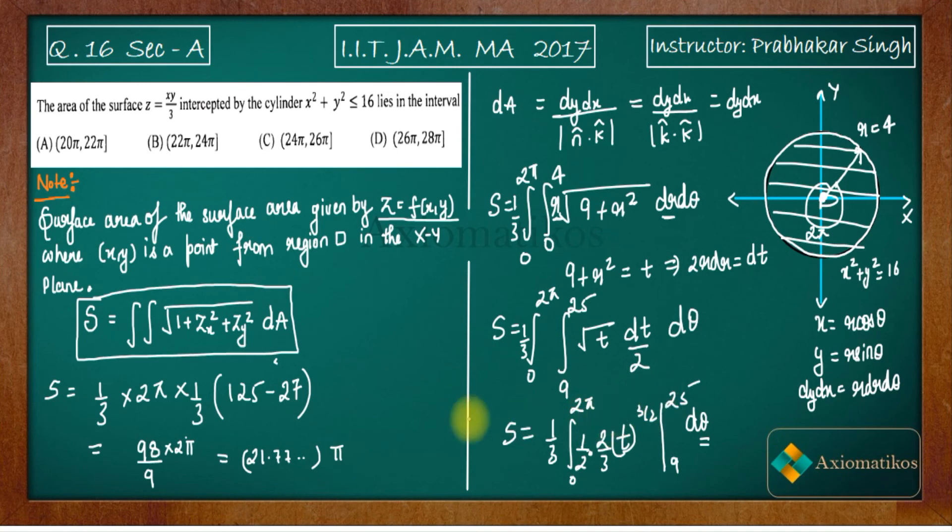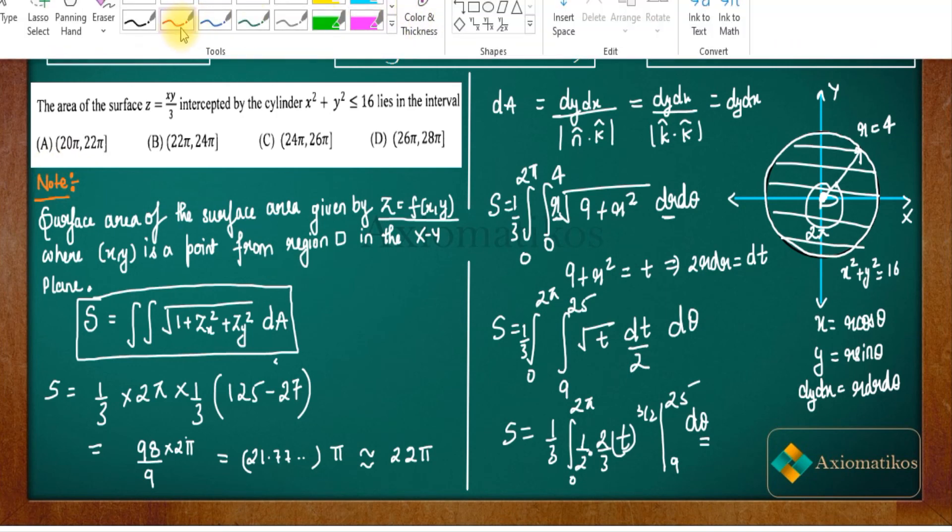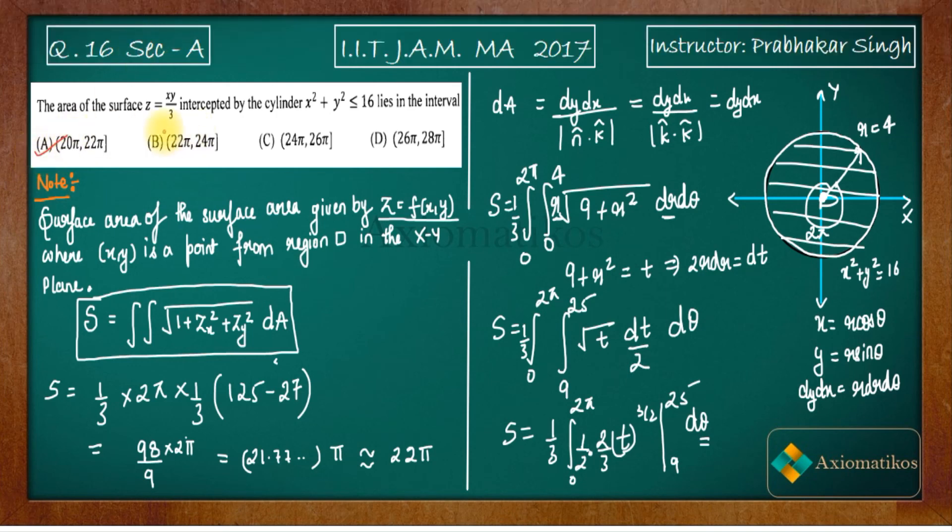So see if you will integrate this and all the limits you will put you will get this. So you are getting 21.777 multiplied with π. So it is nearly equal to 22. Not exactly equal to 22 but we can say that it is nearly equal to 22. So it belongs to option A. Why? Because see it is in between it. So A is correct and all other remaining options are false.